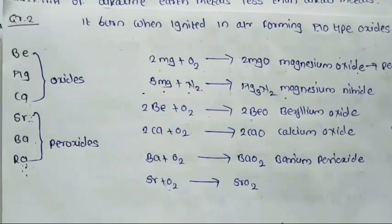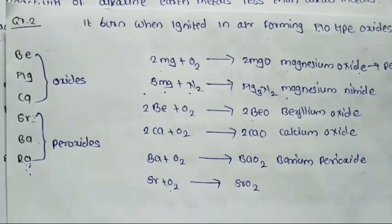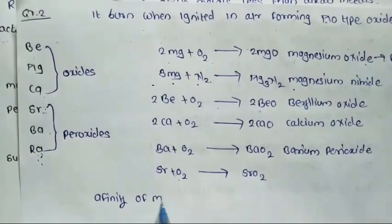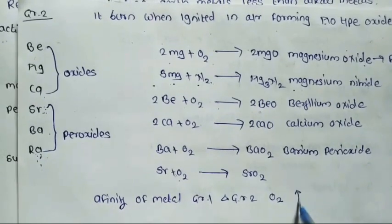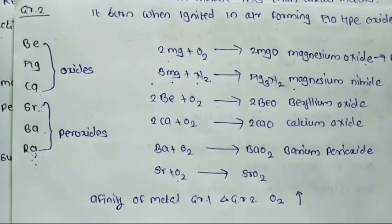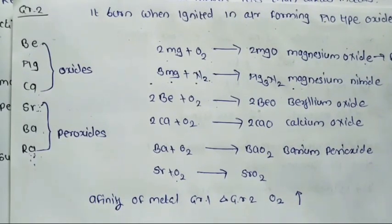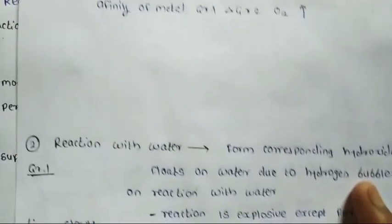The affinity of metals in Group 1 and Group 2 toward oxygen increases down the group. This is the first chemical reaction: alkali metals and alkaline earth metals react with oxygen to form a layer of oxides — that is, formation of monoxide, peroxide, and superoxide — and reactivity of these metals toward oxygen increases down the group.